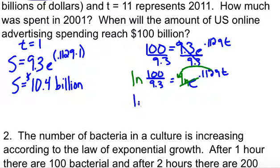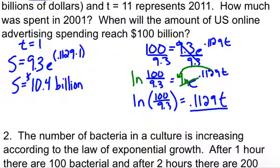And we're left with the natural log of 100 over 9.3 equals 0.1129t. Finally, to get T by itself, we're going to divide both sides by 0.1129. And now we're ready to go to our calculator.